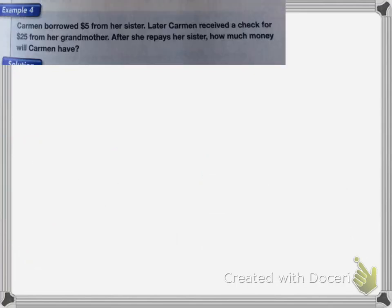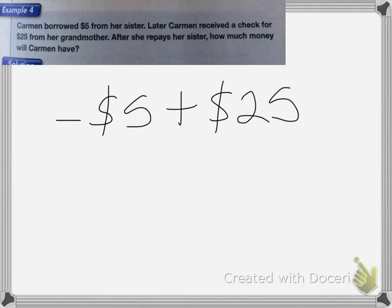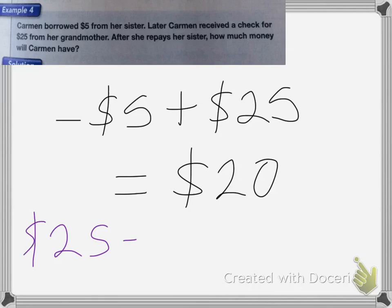Here we have Carmen borrowed $5 from her sister. Later, Carmen received a check for $25 from her grandmother. After she repays her sister, how much money will Carmen have? So we can use negative numbers to represent debt, or borrowed money. So after borrowing the $5, Carmen had negative $5, because she's borrowed it, she has to pay it back. She then receives $25 from grandma. When you add a negative 5 plus a positive 25, you're going to end up with $20. Or you would think $25 minus the $5 she borrowed, which is equal to the $20 she has left.